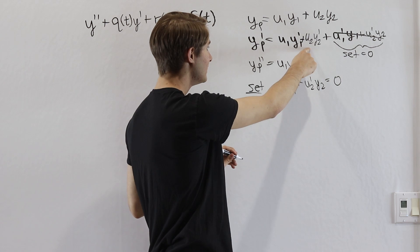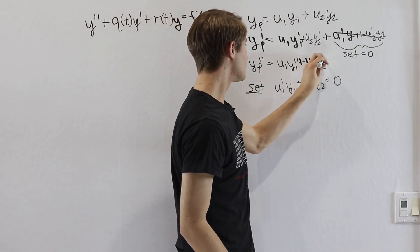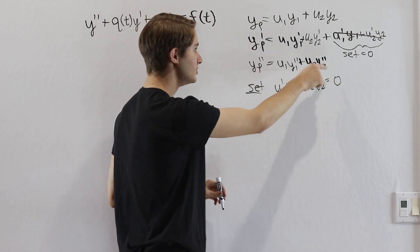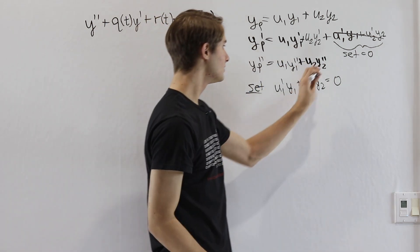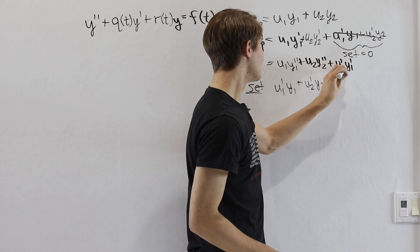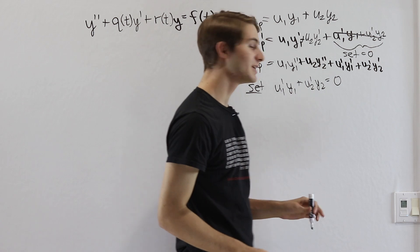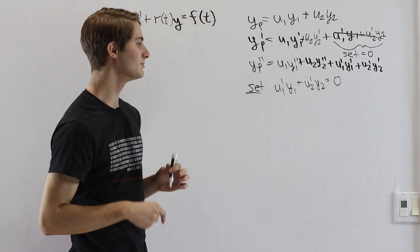When we differentiate this again, once again we'll have our u2y2 prime, and then when we differentiate here by the product rule, we are going to end up with u1 prime y1 prime and then a u2 prime y2 prime. But because it's just the first derivative, not so big of a deal.